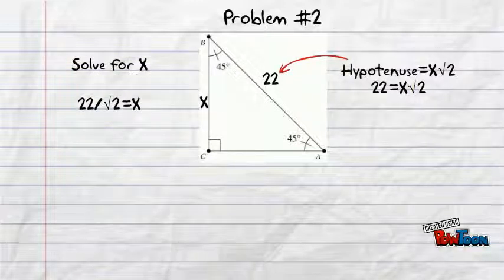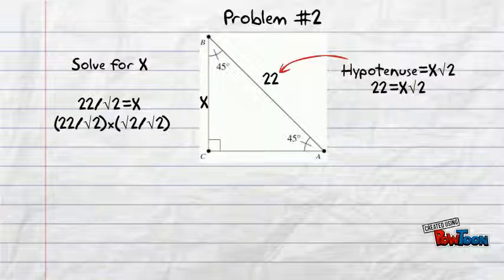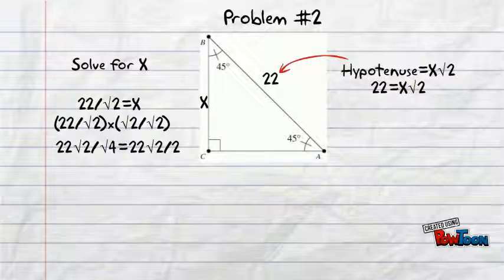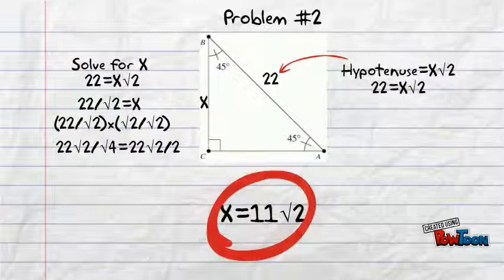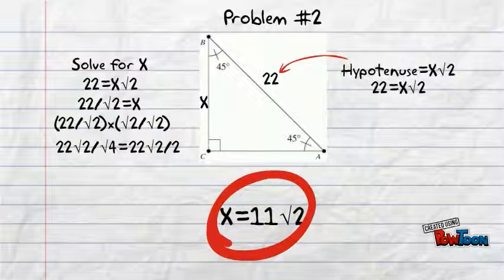Then, because we can't have a root in the denominator, we multiply both parts of the fraction by root 2 and get 22 root 2 over root 4, which is the same as 22 root 2 over 2, because the square root of 4 is 2. Lastly, we divide the whole numbers and our answer becomes 11 root 2.